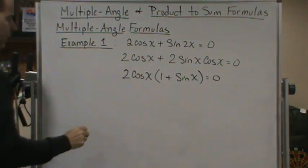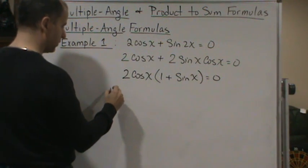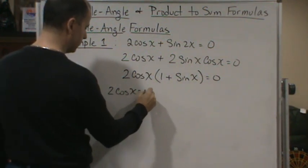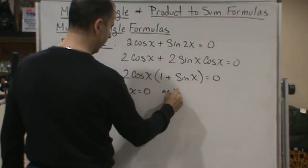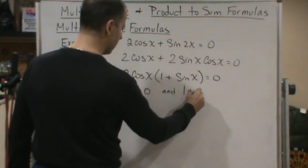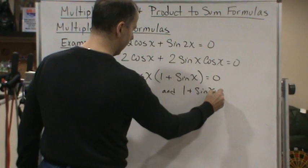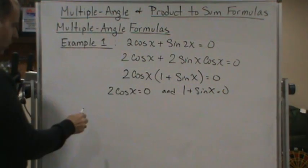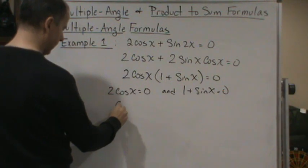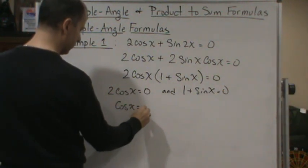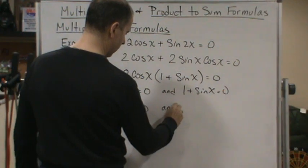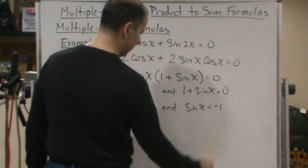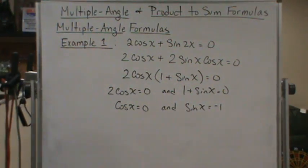Now I can use the zero product principle, and that gives me two equations to solve. 2 cosine x is equal to 0, and 1 plus sine x equal to 0. So this is the same as just cosine is equal to 0, and this over here will say sine x is equal to negative 1.